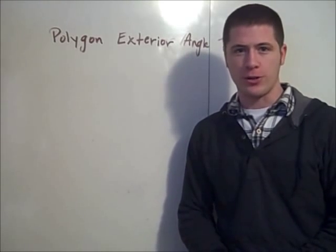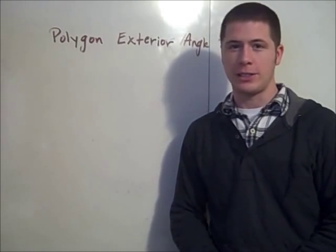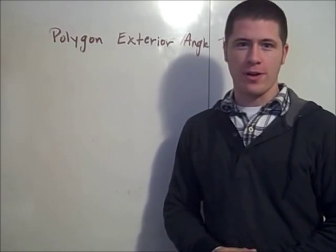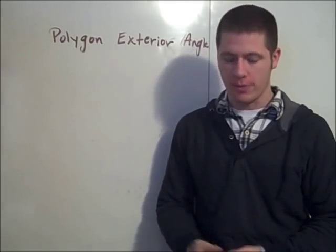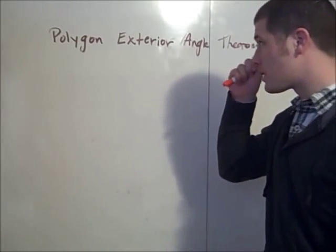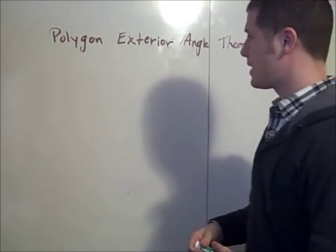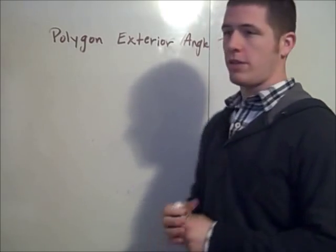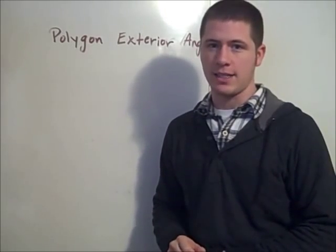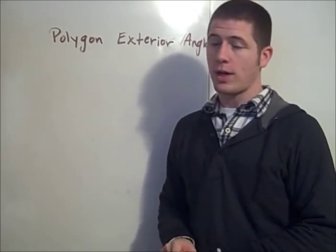In the last geometry tutorial we did the Polygon Interior Angle Sum Theorem, and this will be a proof of the Polygon Exterior Angle Sum Theorem. The theorem says that the sum of all the exterior angles of any convex n-gon is 360 degrees, and it's quite easily shown.